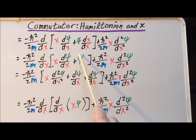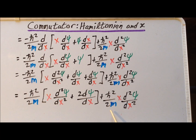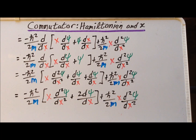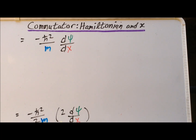Applying the product rule to x times dψ/dx gives x times d²ψ/dx² plus dψ/dx (since dx/dx equals one). We also have the derivative of ψ, which is dψ/dx. We notice we have dψ/dx appearing twice and combine those terms. Then we observe that minus h-bar squared over 2m times x times d²ψ/dx² and plus h-bar squared over 2m times x times d²ψ/dx² cancel. The remaining term is minus h-bar squared over 2m times two times dψ/dx, and the factor of 2 cancels.